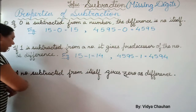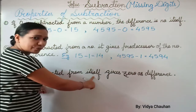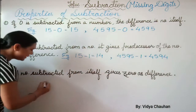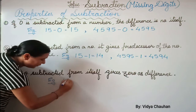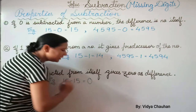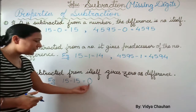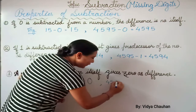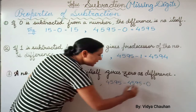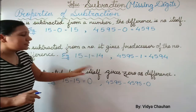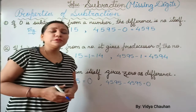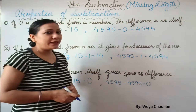The third property: if a number is subtracted from itself, the difference is 0. For example, 15 minus 15 equals 0. Similarly, 4595 minus 4595 equals 0. I hope you have understood these three properties of subtraction — they will help you solve many problems. Thank you so much for attending the lesson!